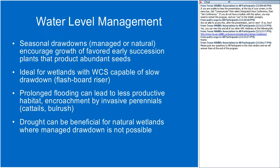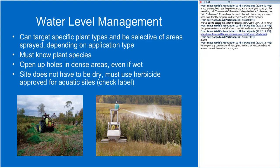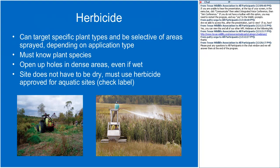Herbicide is a more selective way to reduce growth of undesirable plants and control non-native plants. You can target specific plant types and be selective in the areas of treatment. However, you must know your plant communities, because some herbicides are more effective on certain species versus others. In situations where there is water, you must use a herbicide approved for aquatic sites — the label usually tells you this.